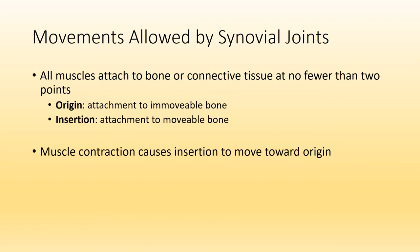For the next portion of this lecture, we are going to get into movements that are allowed at synovial joints. This portion is going to be extremely important moving forward, especially in Chapter 10 when we talk about muscles. Prior to getting into the movements, we need to address terms such as origin and insertion. Muscles attach to bone at two points — the origin is usually more proximal and is found on the immovable bone; the insertion is usually distal and is found on the bone that moves during the action.